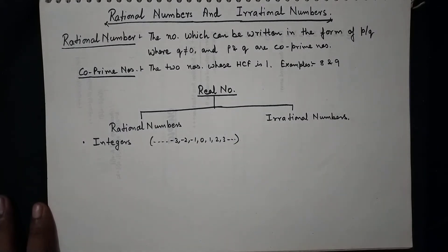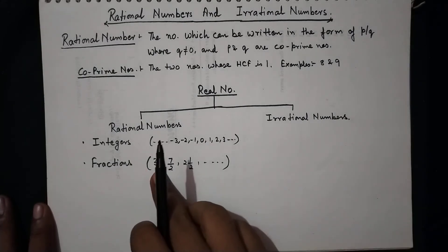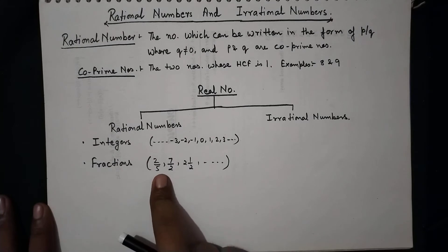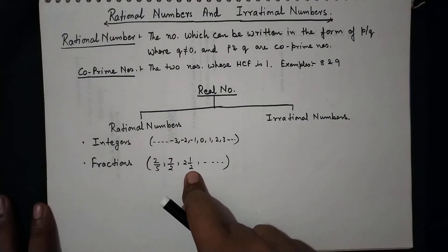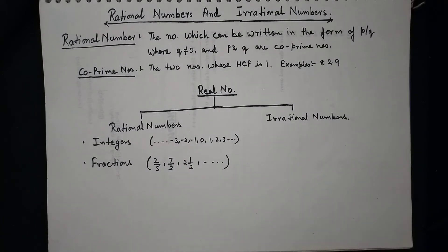And the next one is fractions. Whatever fractions we take, that is also included in a rational number. The fraction may be a proper fraction, it may be an improper fraction, or it may be a mixed one. Any sort of fraction is considered in rational numbers.